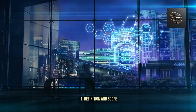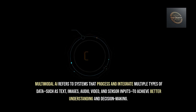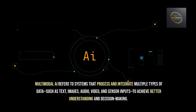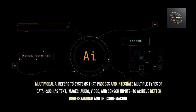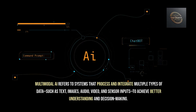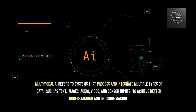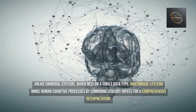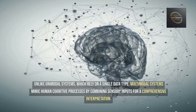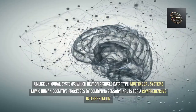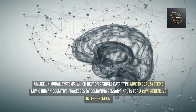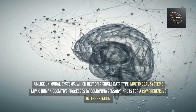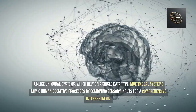Core concepts of multimodal AI. Definition and scope: Multimodal AI refers to systems that process and integrate multiple types of data, such as text, images, audio, video, and sensor inputs, to achieve better understanding and decision-making. Unlike unimodal systems, which rely on a single data type, multimodal systems mimic human cognitive processes by combining sensory inputs for a comprehensive interpretation.